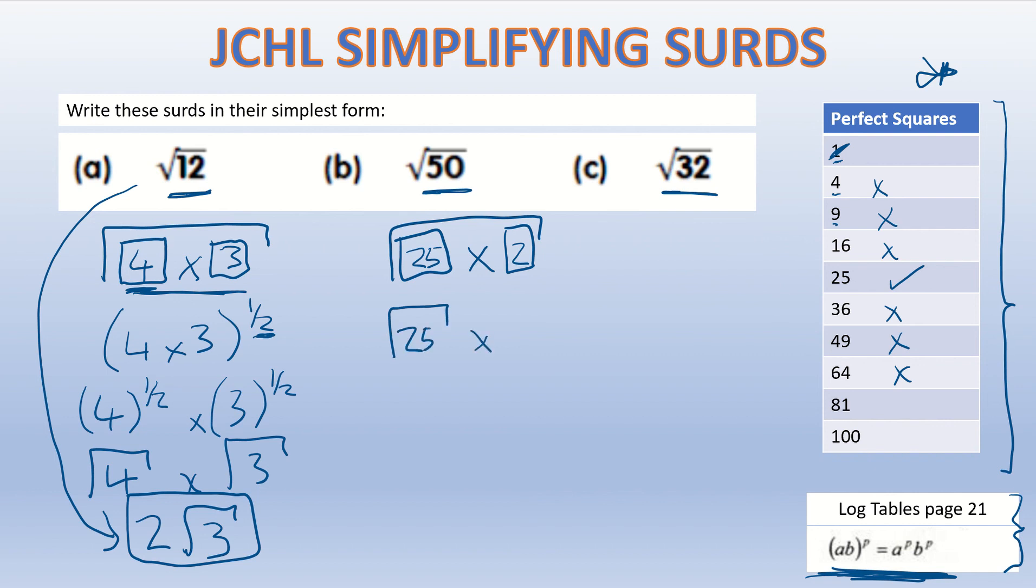Root 25, as we know, is 5. So 5 root 2 is the same as root 50. And again, if you put root 50 into your calculator you'll go straight down to here.